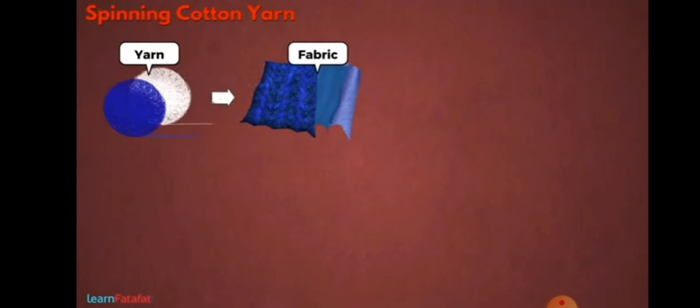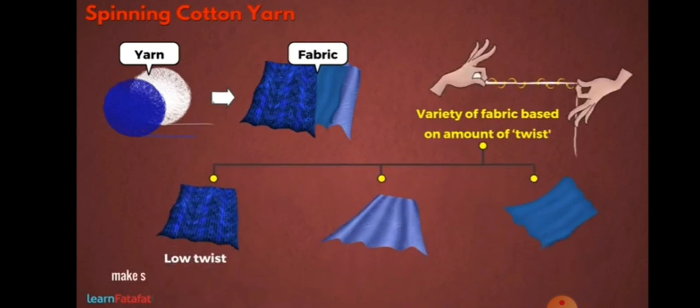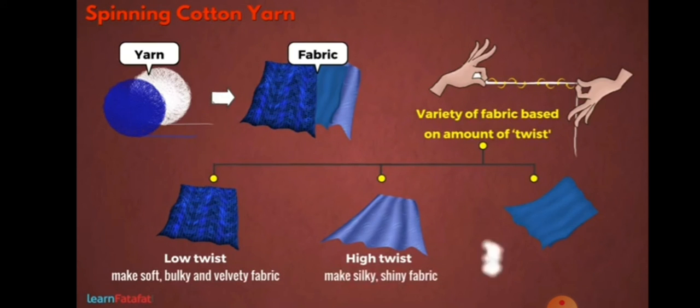Fabric is made from yarn. We get variety of fabric based on amount of twist in the yarn. For example, low twist makes soft, bulky, and velvety fabric, while very high twist makes silky, shiny fabric. In general, average twist is used to make most common fabrics.